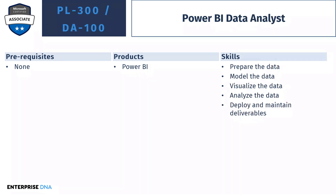Next, we have a bit of a curveball — the Power BI Data Analyst. A note on this: it used to be called DA 100, but it recently got renamed to PL 300. A lot of people still call it DA 100, which is why I've included both names. No prerequisites again. In this one, you're focusing solely on Power BI — doing your basic Power BI tasks: preparing, modeling, visualizing, and analyzing the data within Power BI.